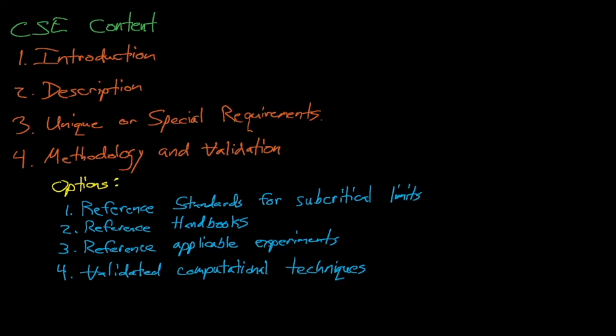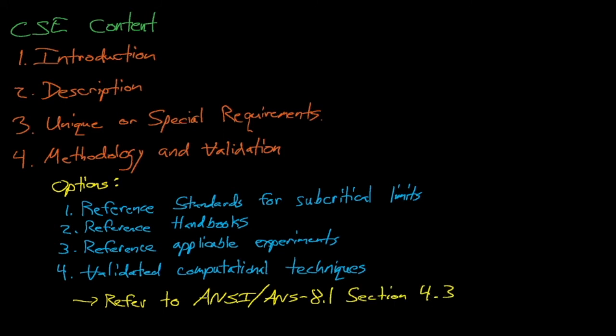This section should also discuss the calculational methods and codes used to develop the subcritical limits, including which cross-section libraries are used, the computing platform, and any code installation verification information. The ANSI ANS 8.1 standard, section 4.3, describes requirements for code validation and bias estimation methods. The CSE should follow these requirements and will usually cite detailed validation studies. The DOE standard mentions that various methods can be used to interpolate or extrapolate code bias estimates, including the TSUNAMI and TSUNAMI IP codes, which I of course cannot recommend highly enough.